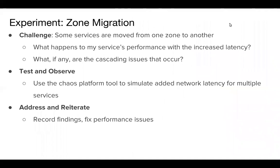That covers the service level — as a service owner, you might want to inject latency on a dependency and observe the results. But since we're part of a huge ecosystem, we might want bigger, grander experiments for our distributed system. One example is a zone or data center migration, which is a challenge we're experimenting with at Uber. Some services get moved from one zone or data center to another, and we want to know what happens to service performance with increased latency, and what cascading issues arise. We can simulate added network latency for multiple services using our chaos platform tool, then record findings, fix performance issues, and run it again over time.